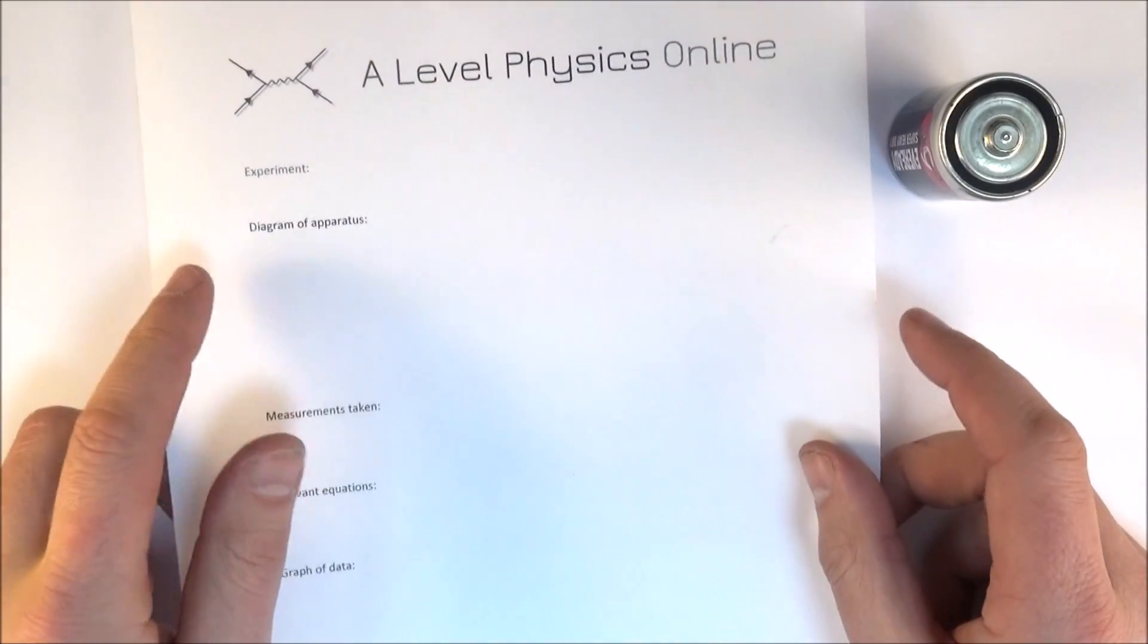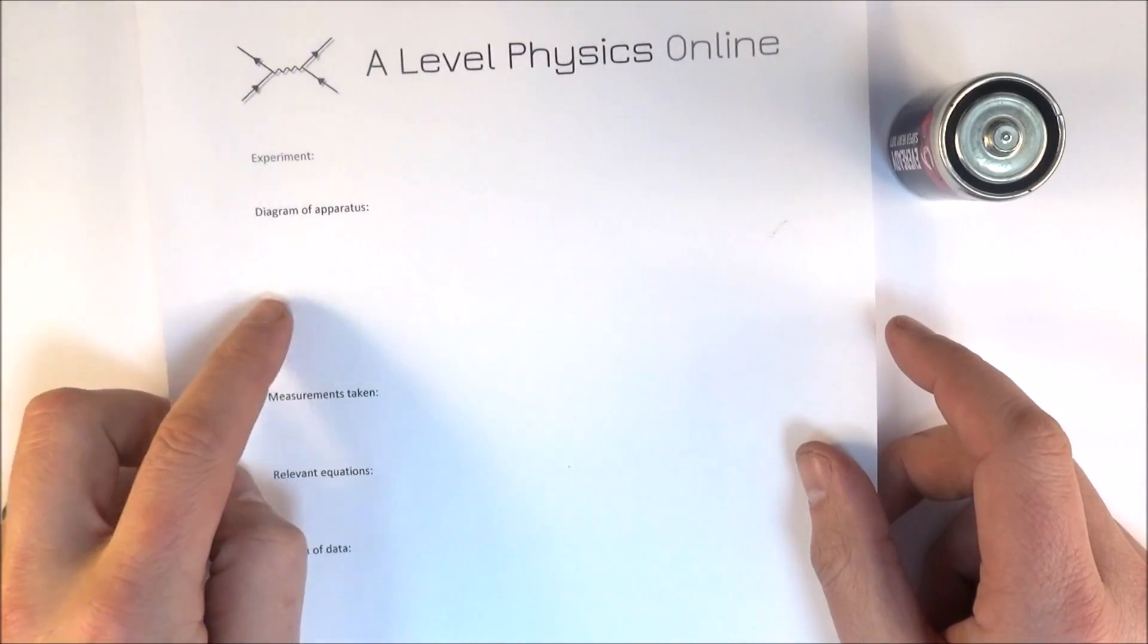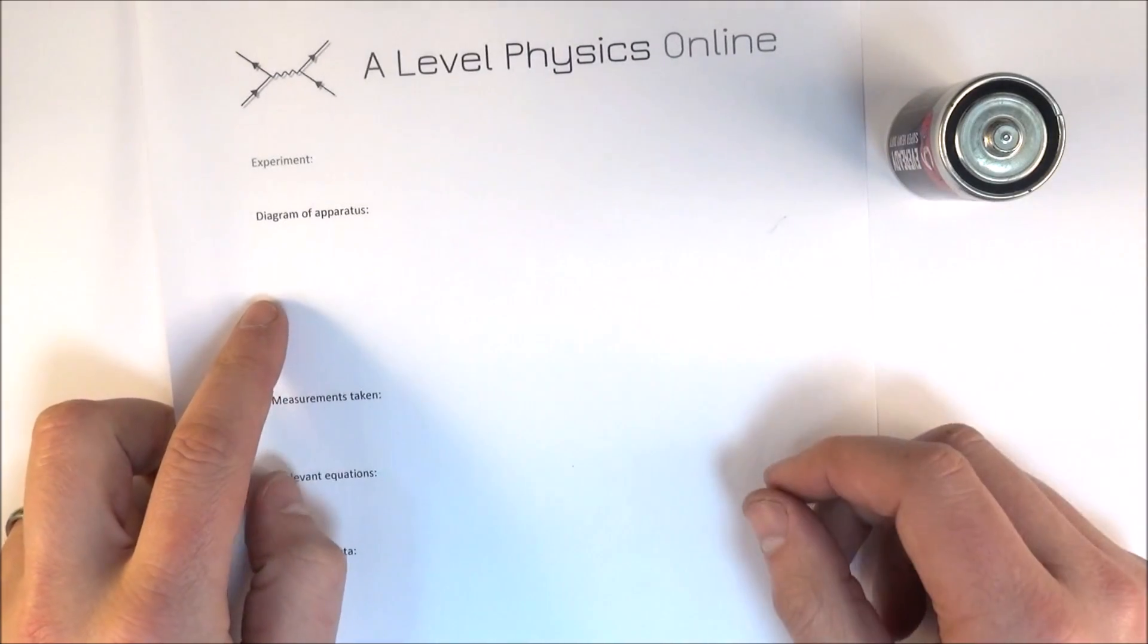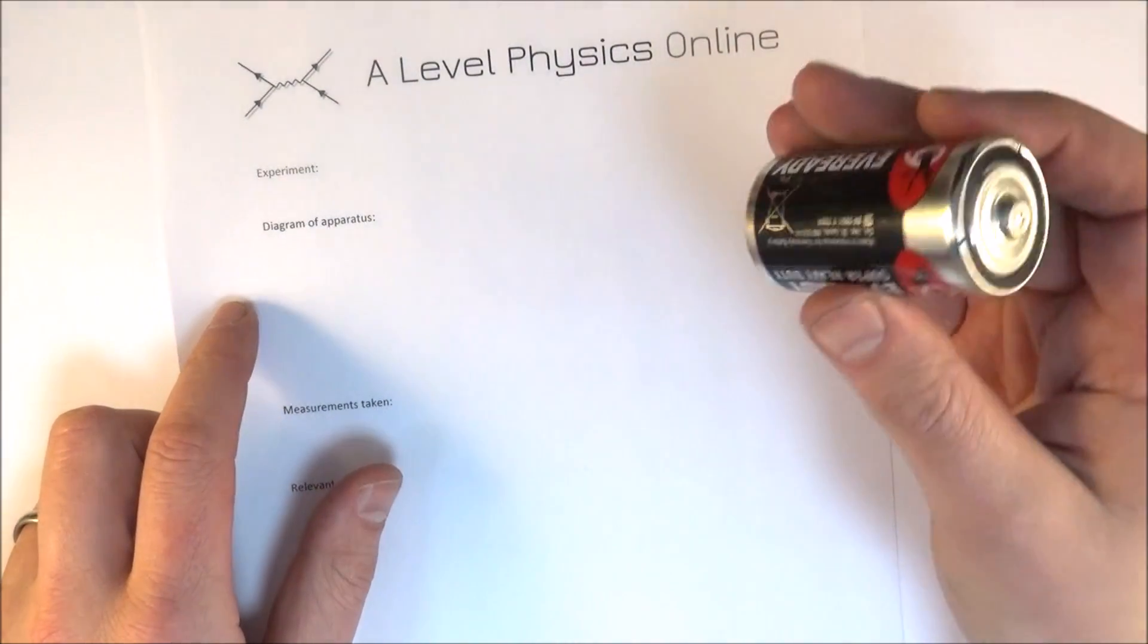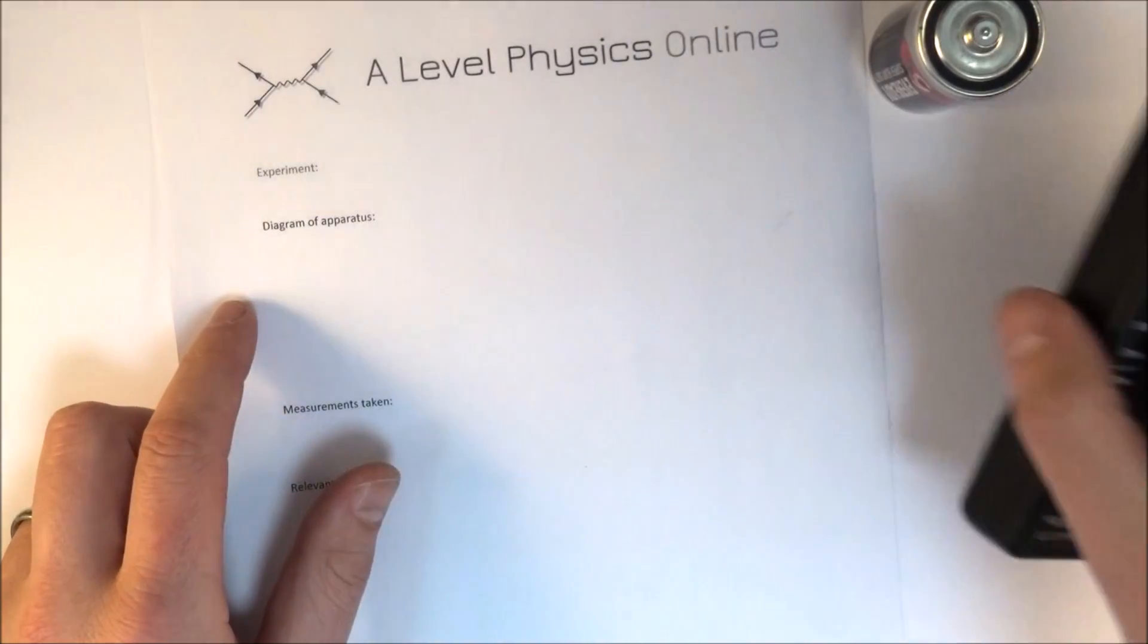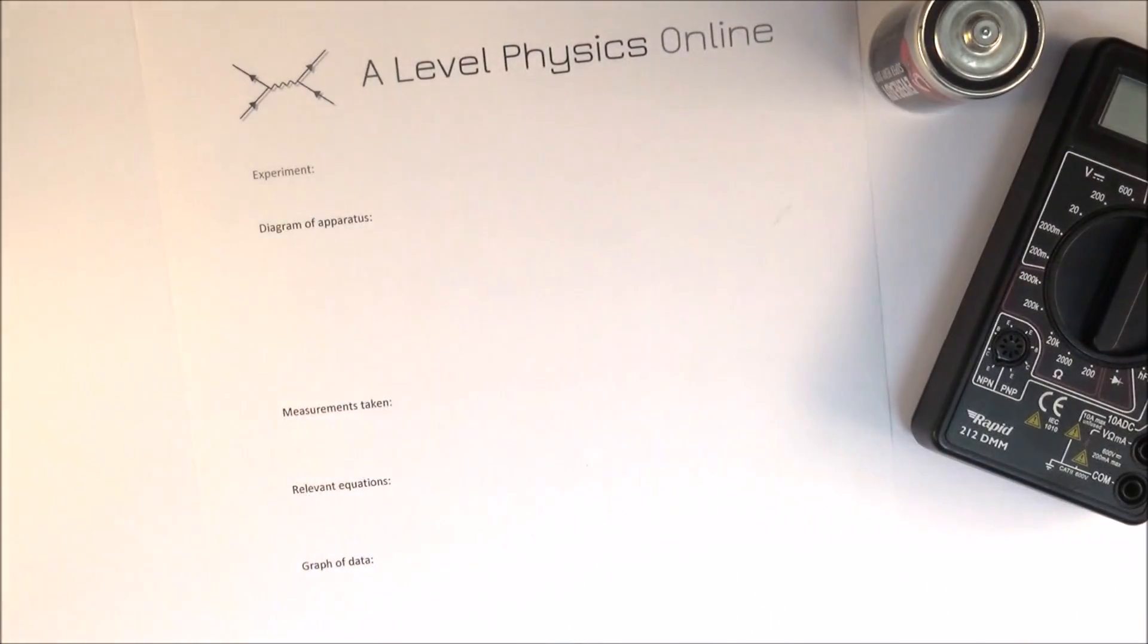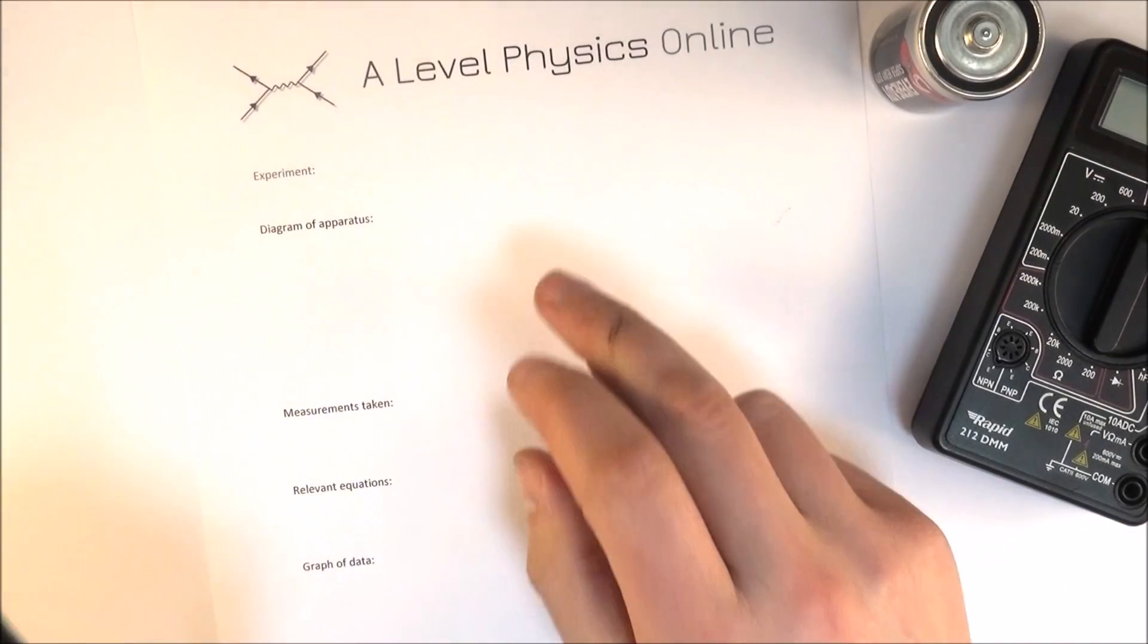First of all you need to think about what equipment you're using and maybe a diagram of the apparatus. So for maybe measuring the internal resistance for a cell you need some kind of meter that you're going to be recording things on. And it's often useful in your notes to maybe just jot down a diagram of the apparatus and how it's set up.